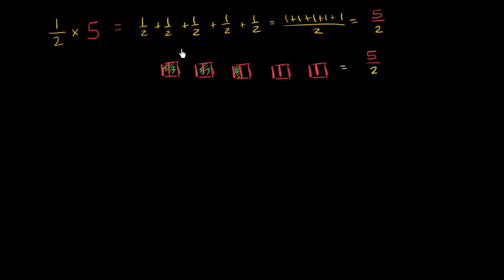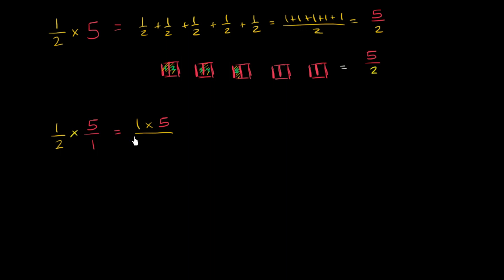So far we just did it thinking about what multiplication actually means. But if you want to compute this, multiplying fractions is actually straightforward — as long as you express both numbers as fractions. 5 is the same thing as 5 over 1, so we multiply 1/2 times 5/1. Now I can just multiply the numerators: 1 times 5, over 2 times 1. 1 times 5 is 5, 2 times 1 is 2. So once again, we get 5 halves.